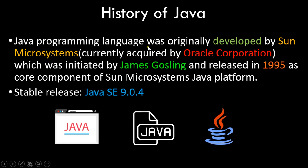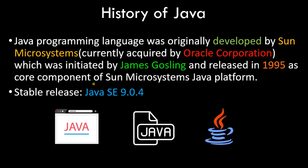Java was originally developed by Sun Microsystems, currently acquired by Oracle Corporation. It was initiated by James Gosling and released in 1995 as a core component of the Sun Microsystems Java platform. As of March 3rd, 2018, the stable release available on the Oracle website is Java SE 9.0.4, where SE stands for Standard Edition — we'll cover what SE and EE mean shortly.